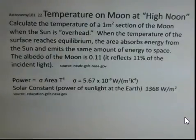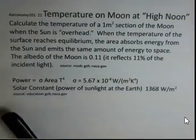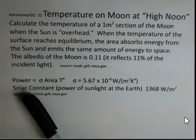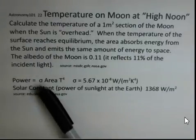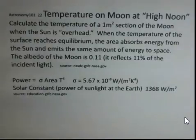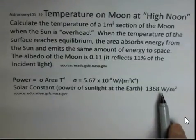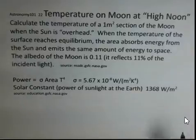So our mechanism here will be to make use of this relationship for black bodies, that the power emitted by a black body is equal to Stefan's constant times area times temperature to the fourth power. And consider the solar constant, the amount of power available in sunlight per square meter at the distance of the Earth.